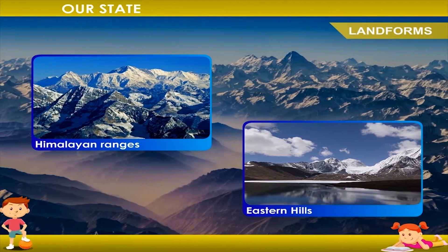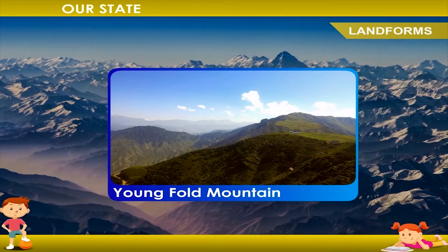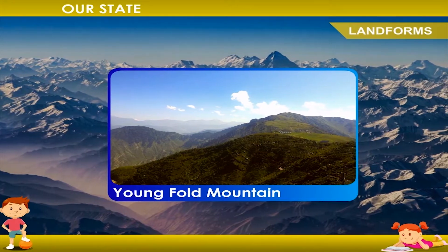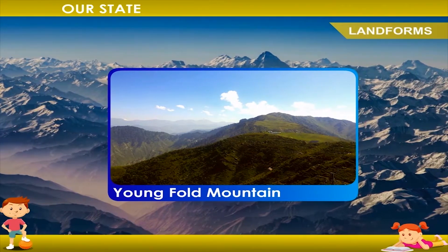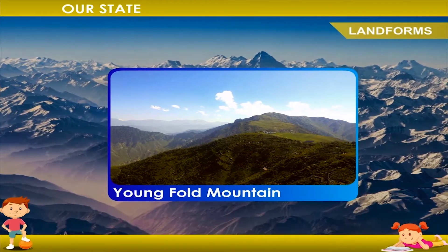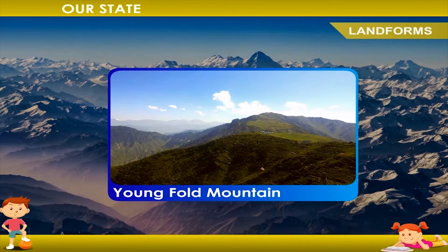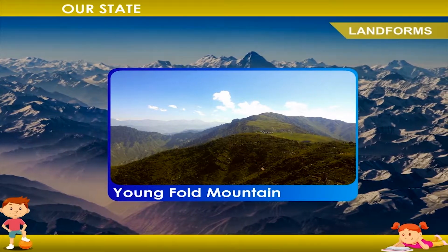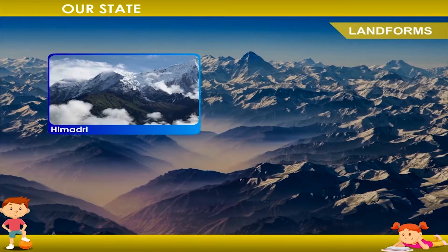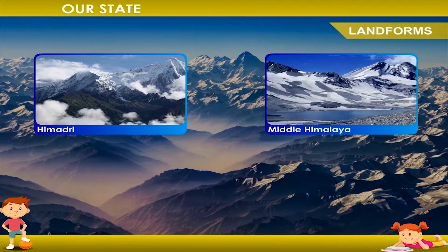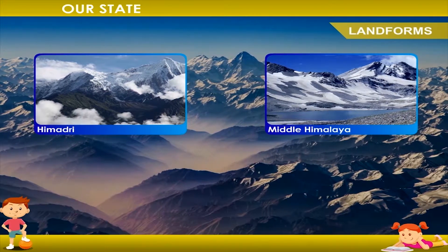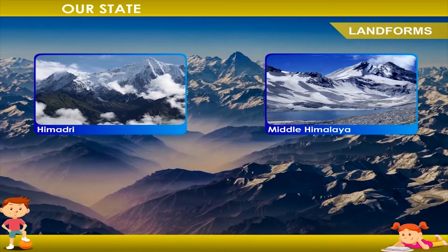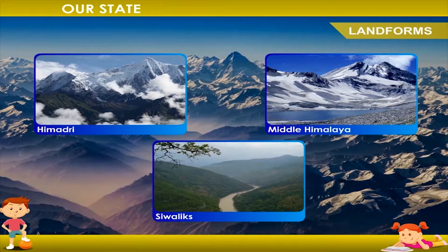The Himalayas are young fold mountains and are divided into three main ranges that run parallel to each other. These are the Himadri, the Lesser or Middle Himalaya, and the Outer or the Shivaliks.